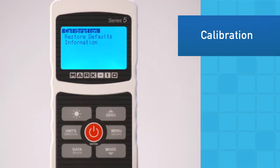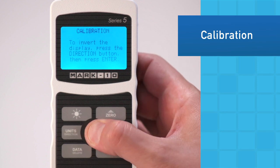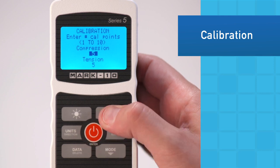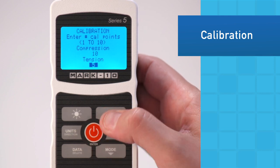Calibration is easily done utilizing deadweights or reference load cells. The user may select up to 10 data points in each measuring direction and may specify the exact weights of each data point in any supported unit of measurement.